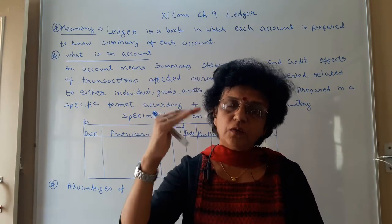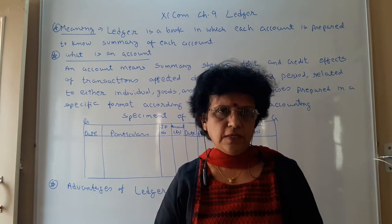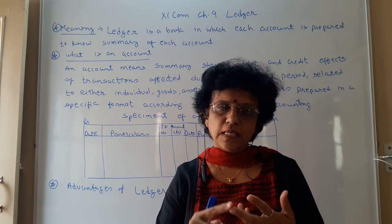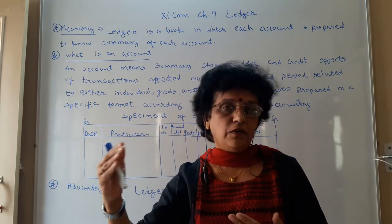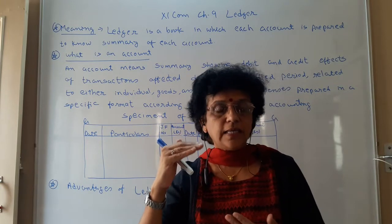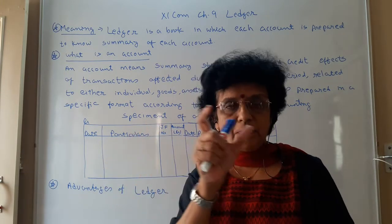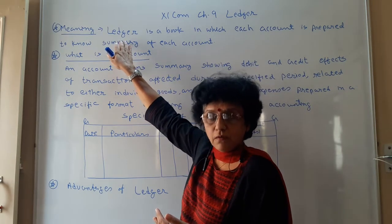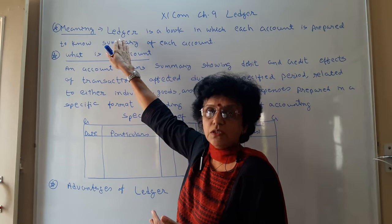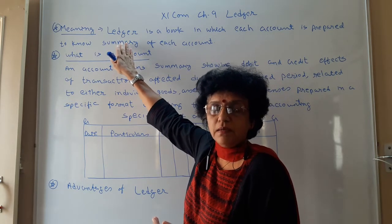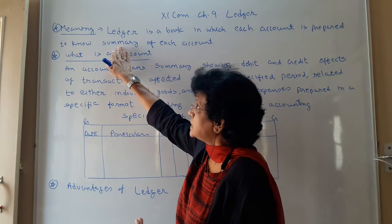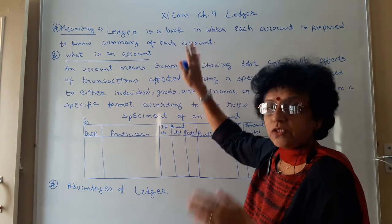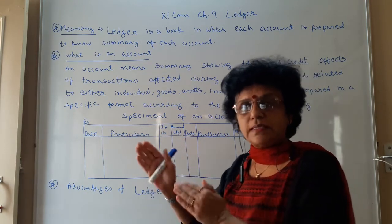Like this, if you count, you keep on getting N number of names — Ramesh account, Ram account, purchase account, sales account, wages account, octroi account, salary account, commission account — the list goes on. In the journal, we only get information about a particular transaction. We want to know the summary — the concluding figure — such as how much wages were spent in total. So when you want to know the summary, you have to prepare an account, and the book in which all such accounts are recorded is known as a ledger.